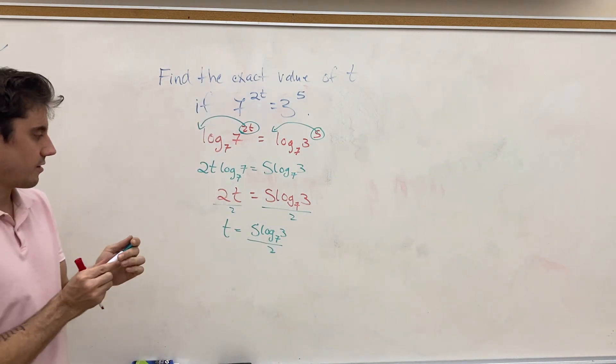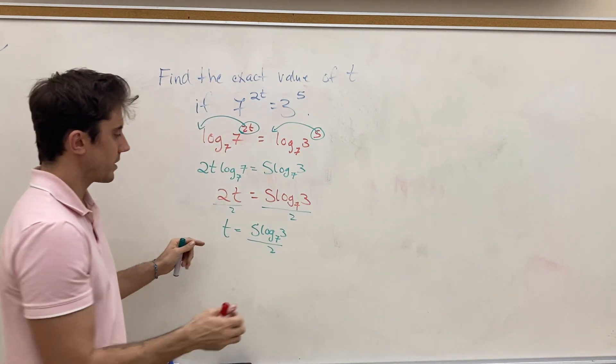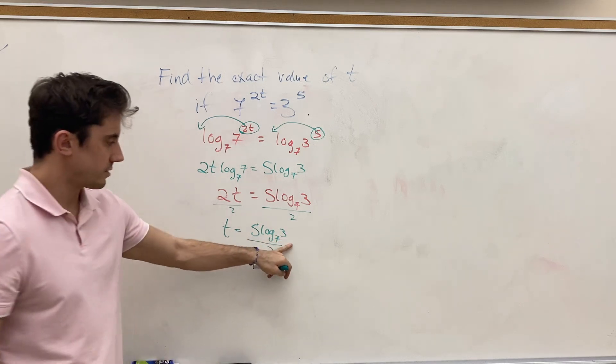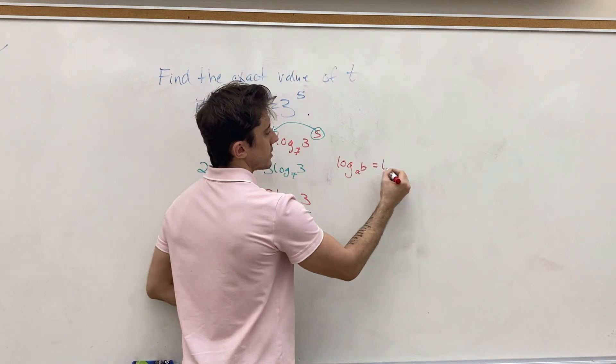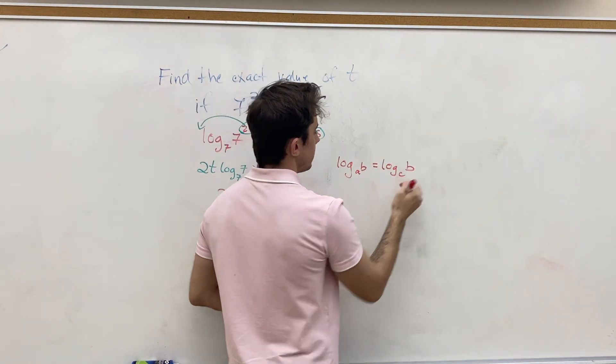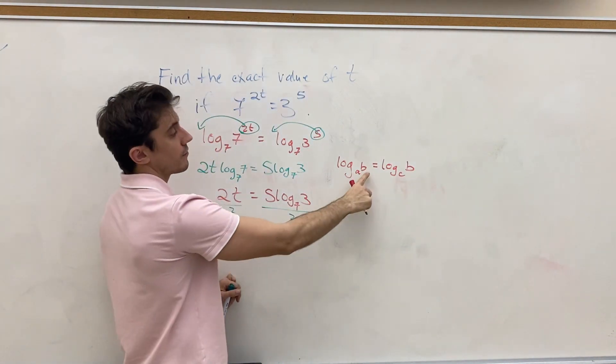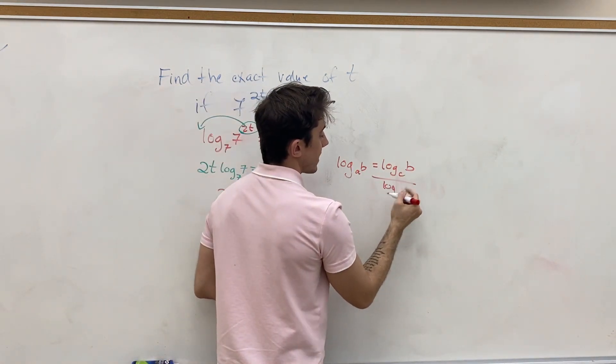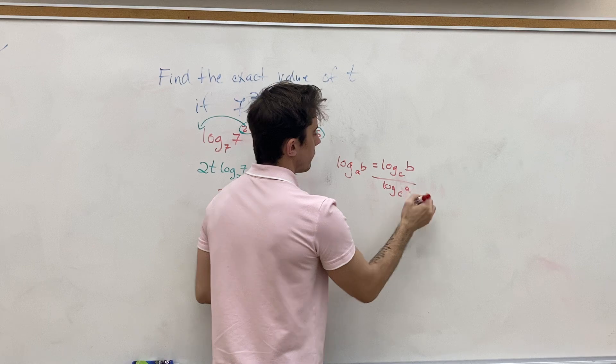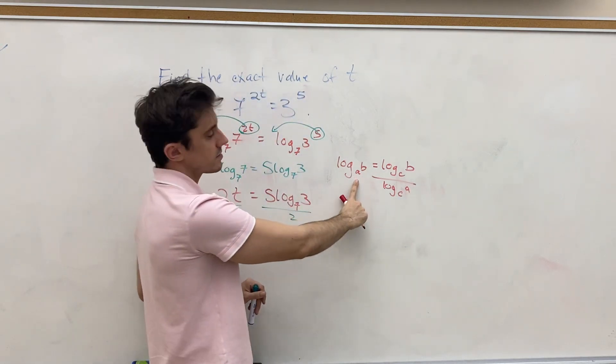And to finish this off by simplifying a tiny bit, we can use one of the log rules about a change of base. We know that log A of B is equivalent to log base C of B. It's a new base of the argument on top over the log base, that same new base of the previous base. So, it's simply log base C of B over the log base C of A.